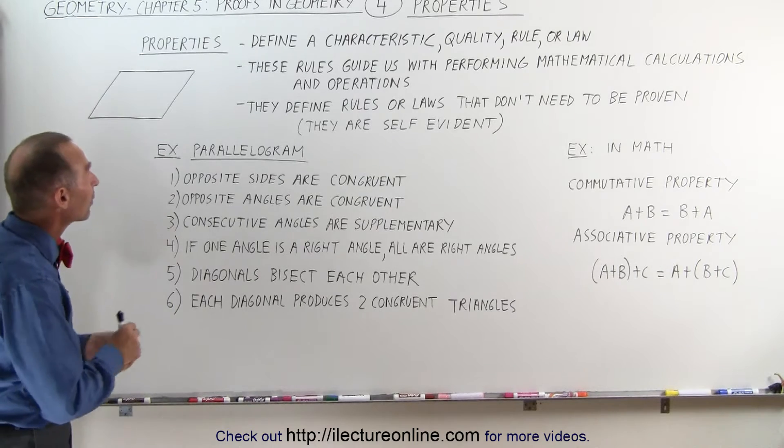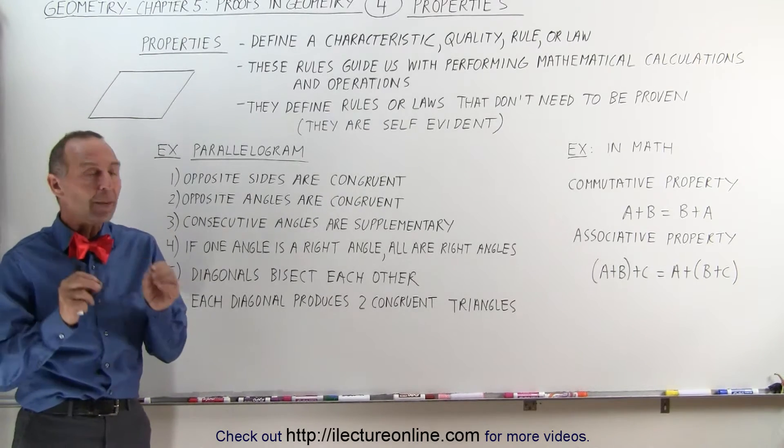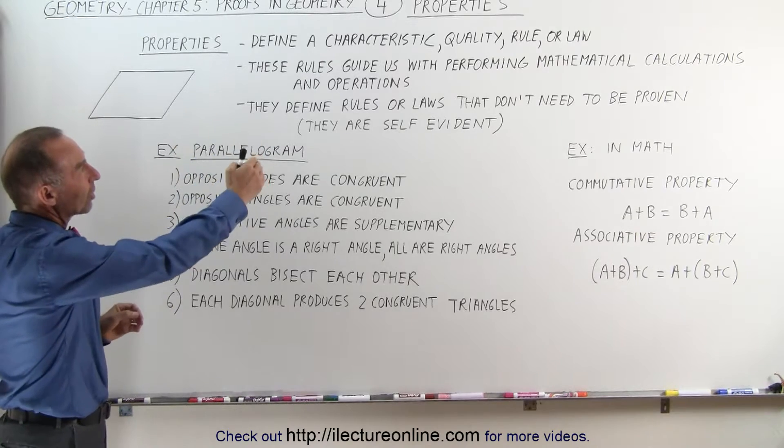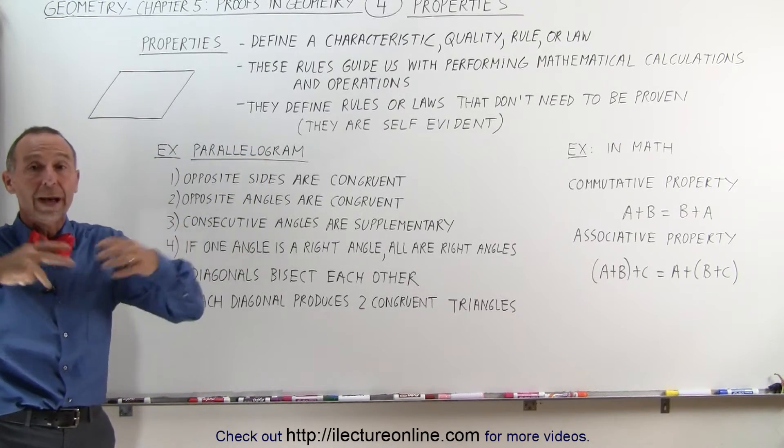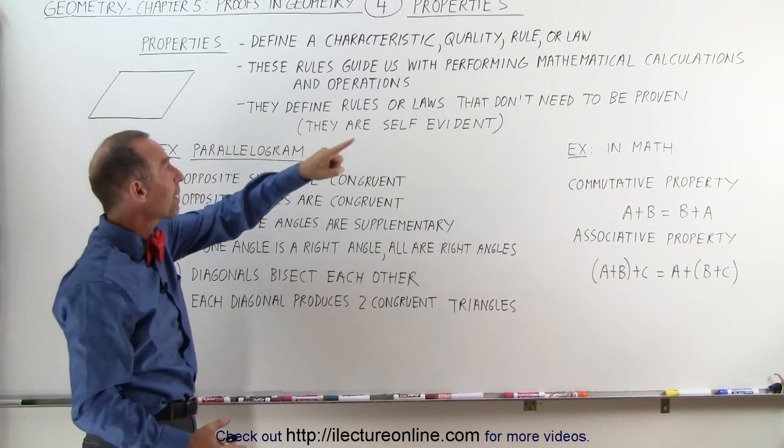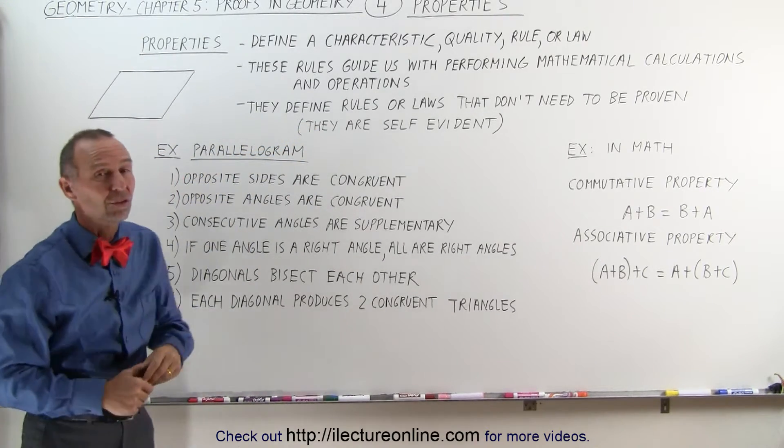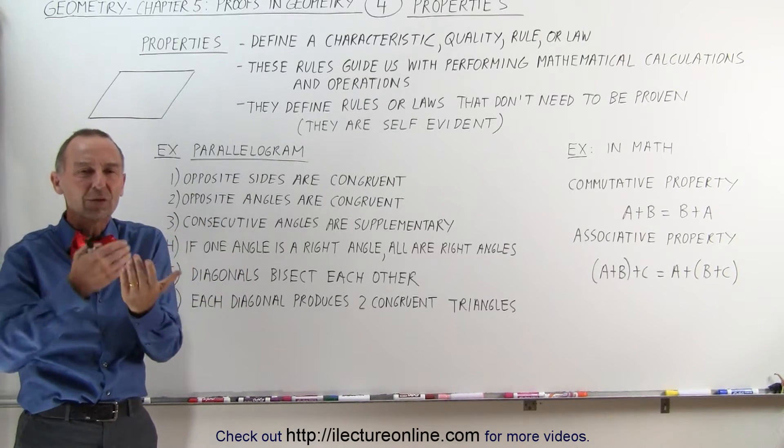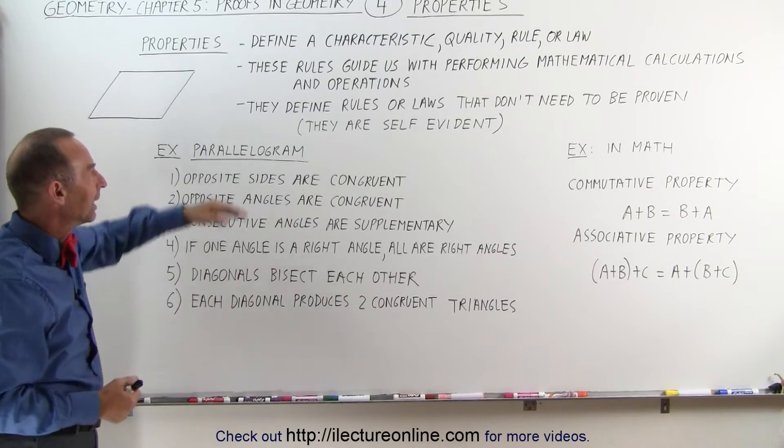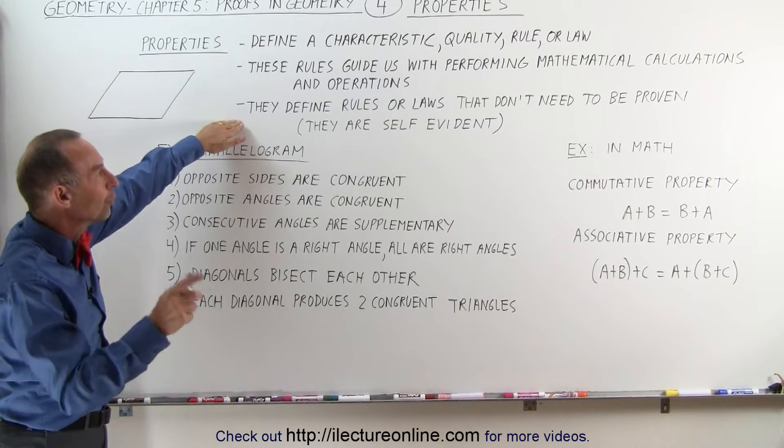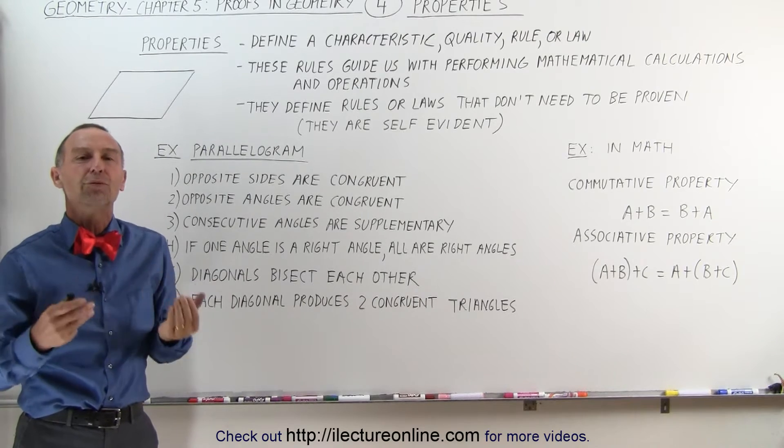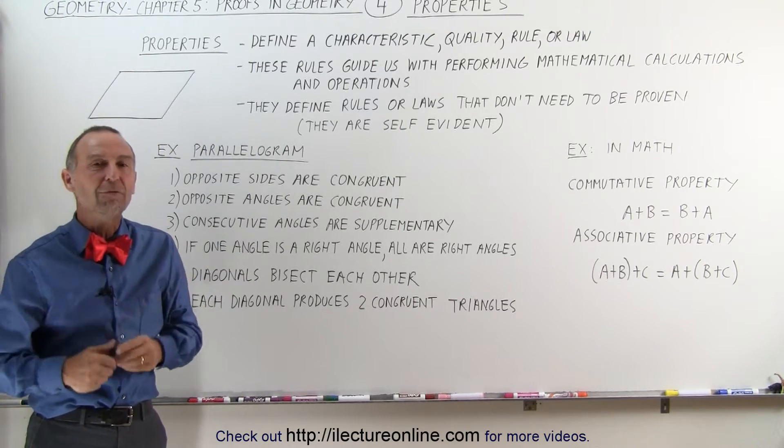Now we're going to talk about properties. Properties are particular characteristics. They define a characteristic, a quality, a rule, or a law about a certain thing. These rules guide us with performing mathematical calculations and operations. Once we know the properties of something, we can work with that item. They define rules or laws that don't need to be proven. They're self-evident. No proof required. We just accept them for what they are.